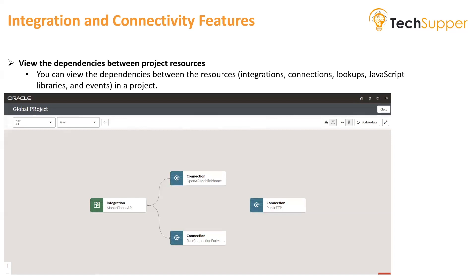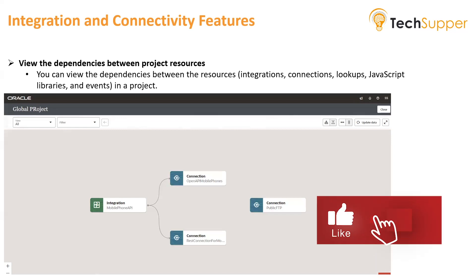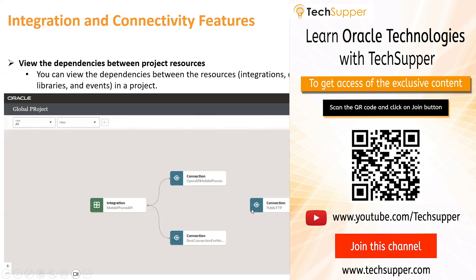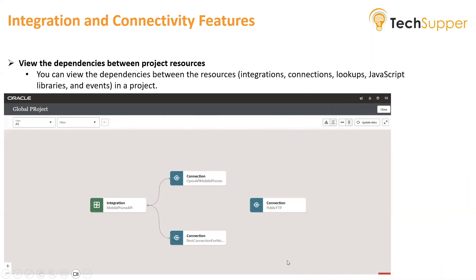To view this, go to your project by clicking on the project name from the main home screen, then click the View Dependencies button. In the screenshot shown, hovering over an integration reveals two lines going to two connections — Open API Mobile Phones and REST Connection for Mobiles. As the project grows with more integrations, connections, lookups, and events, you can see how many integrations a connection is utilized by, or vice versa. This information becomes increasingly useful as the project size grows.